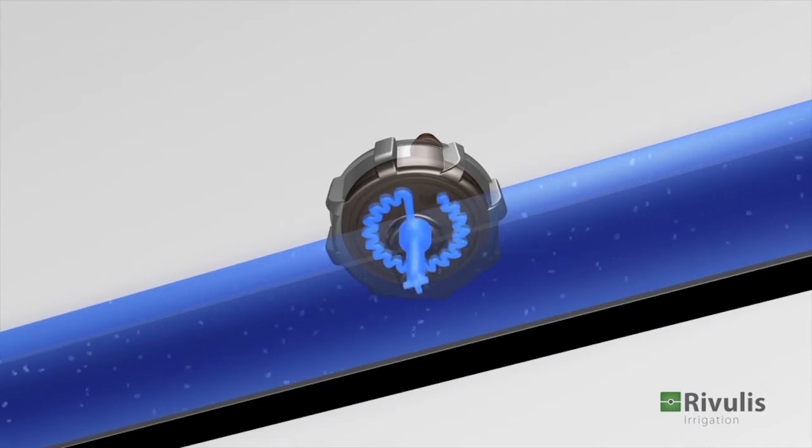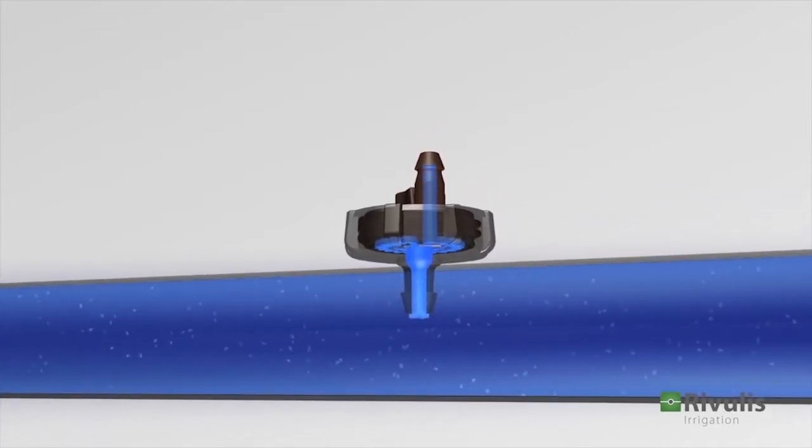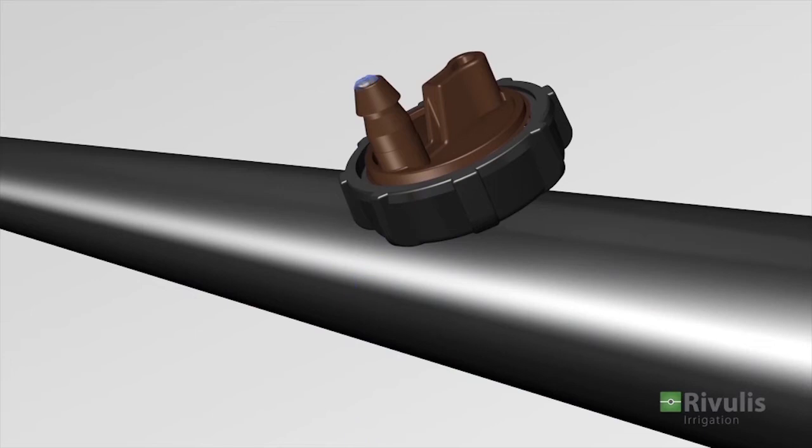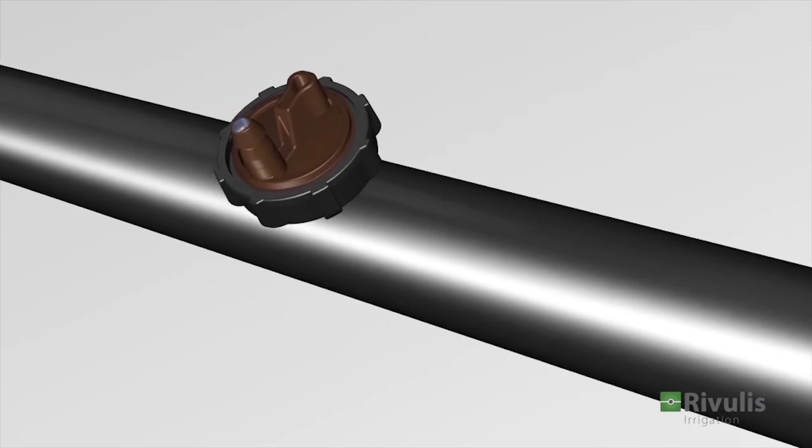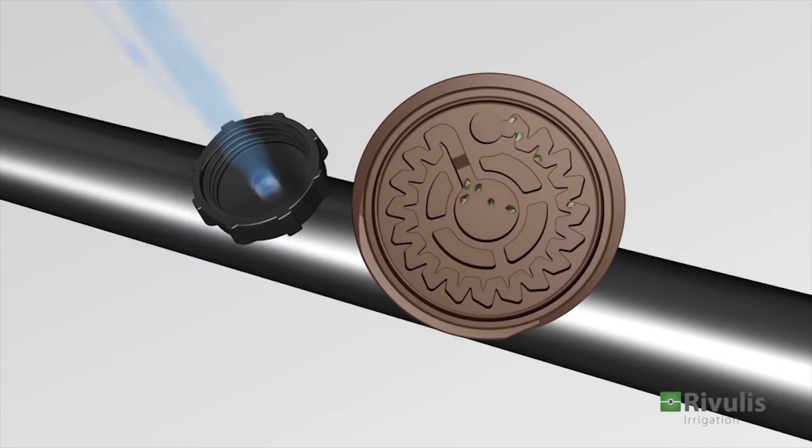The e1000 dripper requires minimal maintenance. It can be unscrewed and rinsed without having to pause the irrigation process.